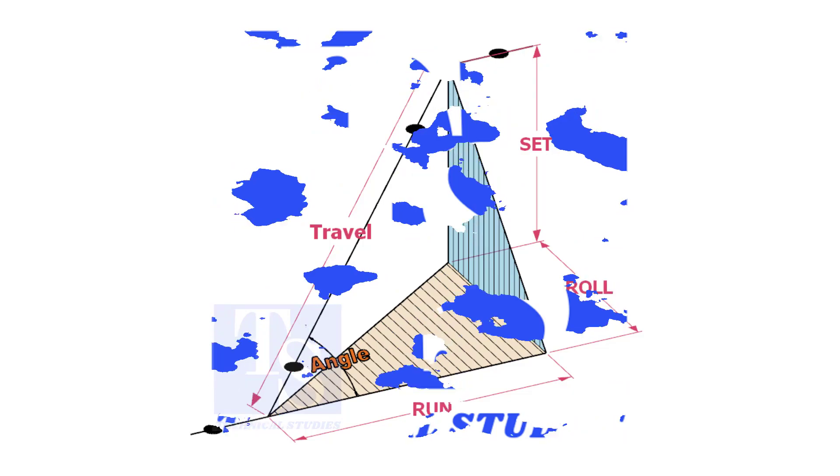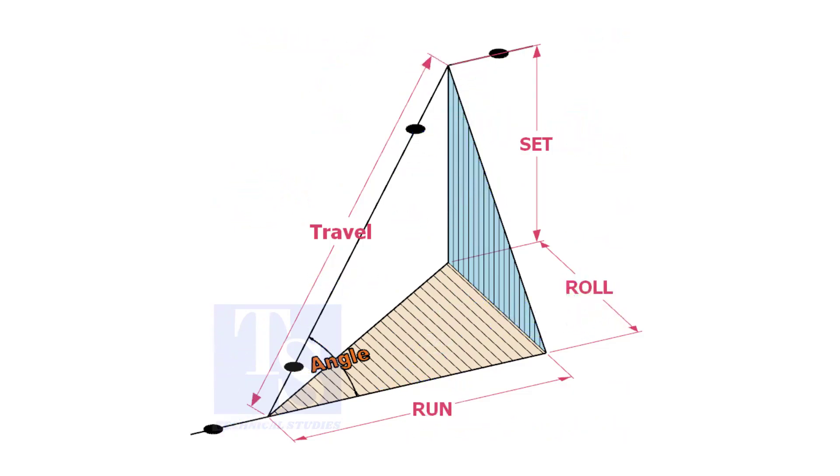Welcome to Technical Studies. In a piping drawing of a double rolled offset, usually the dimensions of the run, set, and roll are given.